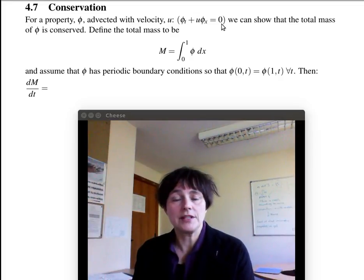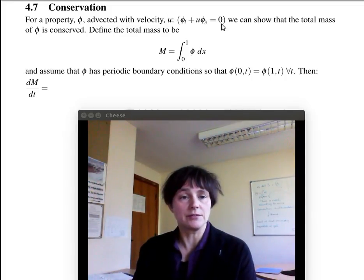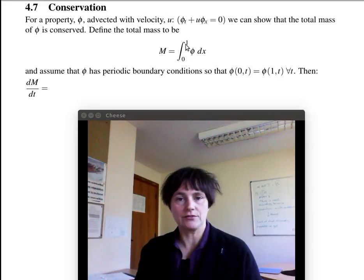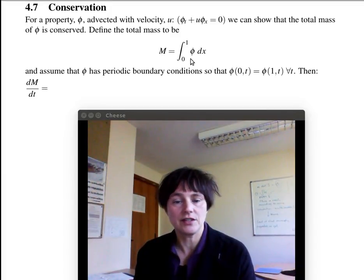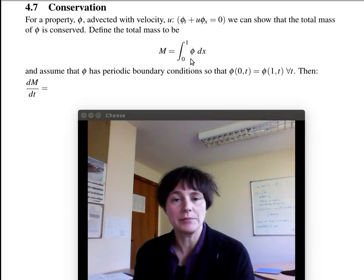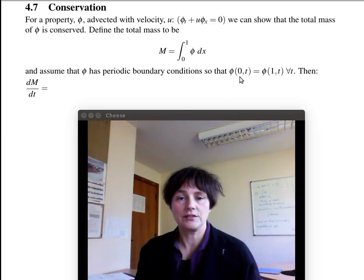And we can show, for the linear advection equation, for the continuous equation, we can show that the total mass of phi is conserved. We define the total mass to be the integral over the domain of phi. We need to assume that phi has periodic boundary conditions, so that if some of phi disappears out of one boundary, it comes out of the other. So we assume that phi at position x equals zero is equal to phi at position x equals one, for all time.